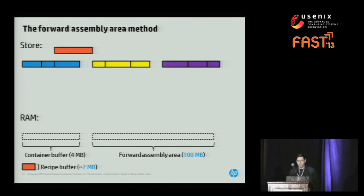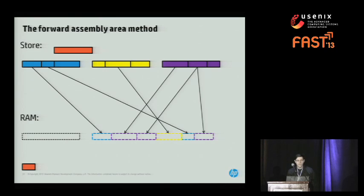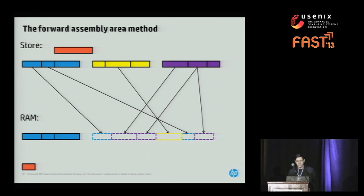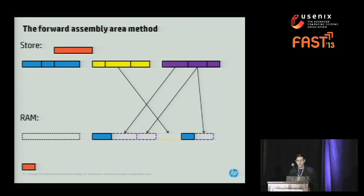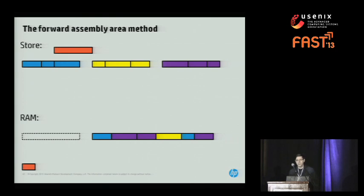We load in a part of the recipe that describes our forward assembly area, and use this to calculate which chunks are needed and where they go in the forward assembly area. Our algorithm finds the leftmost unfilled chunk spot and loads the chunk container that has that chunk into our buffer. Then we copy all chunk spots whose data we now have in RAM into place — not just the one we loaded the container for, but all other spots in the forward assembly area that come from that same container. Once we've finished using that container, we move on to the next unfilled spot: we load purple, copy into place, then load yellow, copy into place, and now we've assembled the entire slice and are ready to send it out to the client.